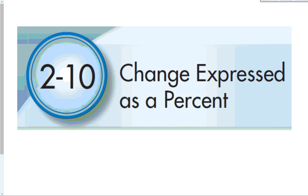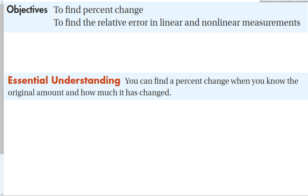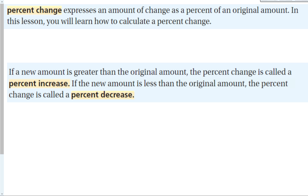Section 2-10: change expressed as a percent. In this section, we are going to find percent change. We dealt a lot with percents last section, calculating different percentages of things. Now we're going to talk about percent change, and use it to find the relative error in linear and nonlinear measurements. The central understanding is that you can find a percent change when you know the original amount and how much it has changed. Percent change is expressing an amount of change as a percent of an original amount.